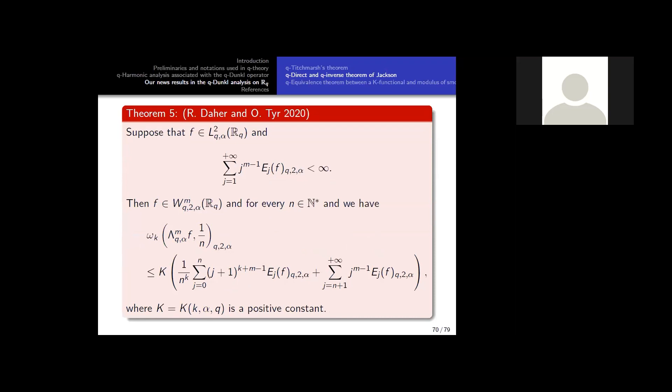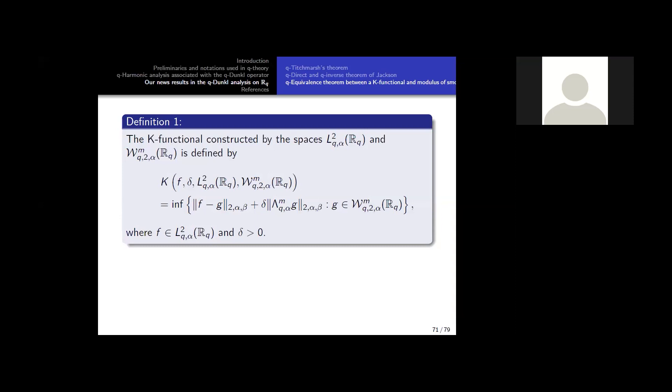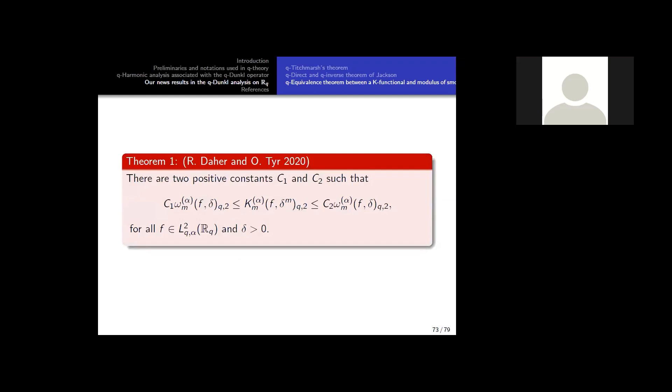Now we pass to the last result. The last result is what we call Peetre's K-functional. This definition: the K-functional is constructed by two spaces, and the other space is defined by this. It's the same as the classical K-functional. Here we just replace the operator, the derivative by the Q-differential operator. And we have the K-functional. So with this definition, we have proven this result. So we proved that there is equivalence between the K-functional and the modulus of smoothness in the Q-analog case.